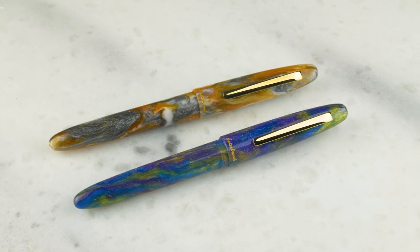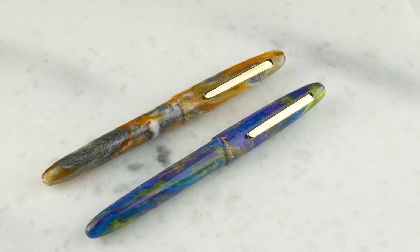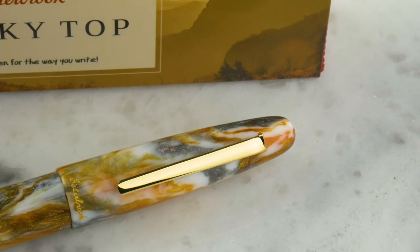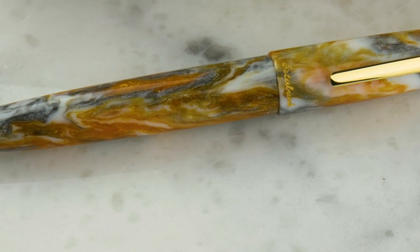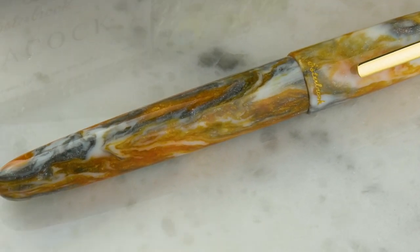Last week we talked about Esterbrook SD Rocky Top and Peacock in the oversized, and mentioned the standard were coming in. The standard size are here. This Rocky Top is really great. It has this gray and orange and white, a kind of amberish swirl to it, made out of diamond cast resin so they have a little sparkle to them. The Peacock is exactly what you'd expect - all the different colors in a peacock's tail like blue, green, purple, turquoise. It's absolutely gorgeous.